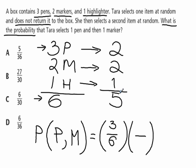Now she has to select a marker. We have two markers out of a total of five items. So our probability here will be two out of five, or two fifths.